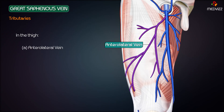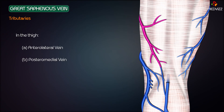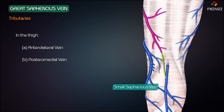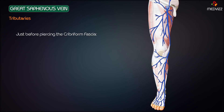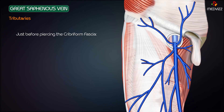In the thigh, the anterolateral vein commences in the lower part of the front of the thigh and joins the great saphenous vein in the upper portion of the thigh. Another important vein is the posteromedial vein, also called the accessory saphenous vein. This posteromedial vein commences from the posteromedial aspect of the thigh, joins the great saphenous vein, and may sometimes also communicate below with the small saphenous vein.